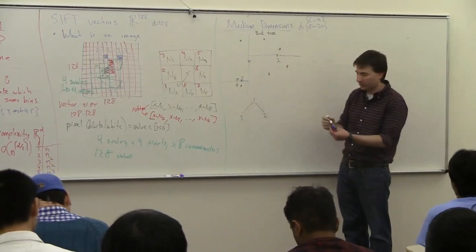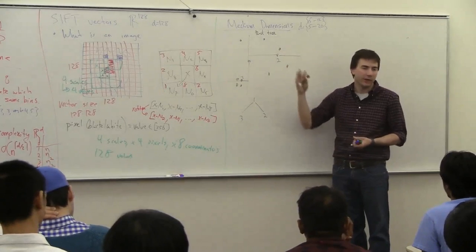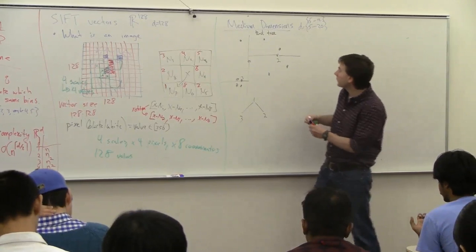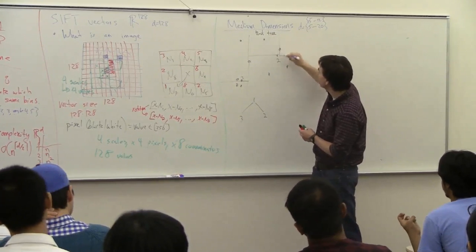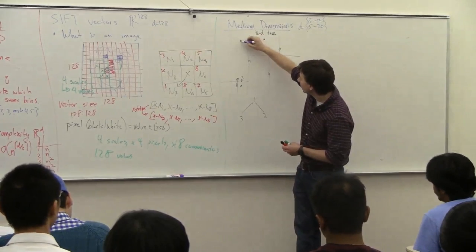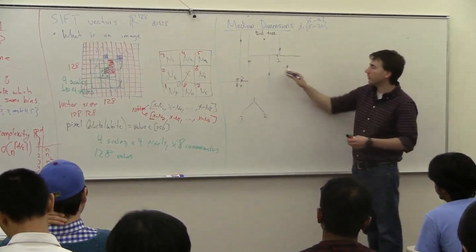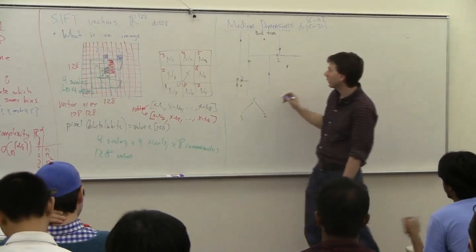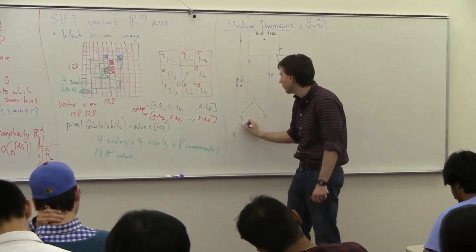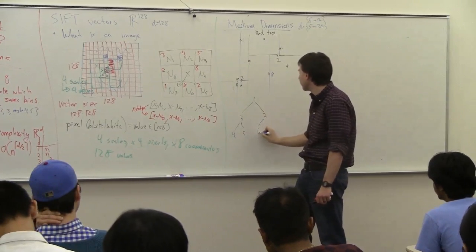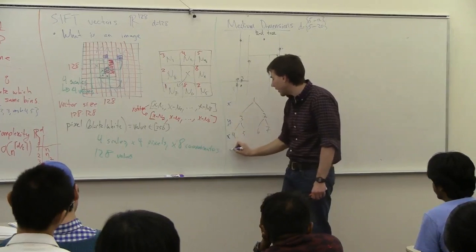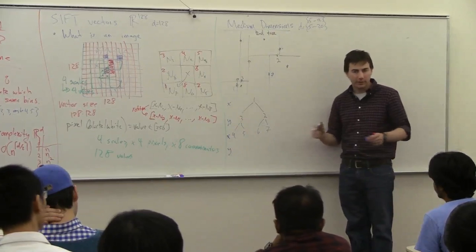Then you switch back to the x direction again. If you were in higher dimensions, you'd switch to the z direction or whatever the third dimension is. Once you finish all the dimensions, you switch back to where you started. You keep splitting — x, y, x, y — until everything is split into some small set. This is the pre-processing step to find the nearest neighbor.